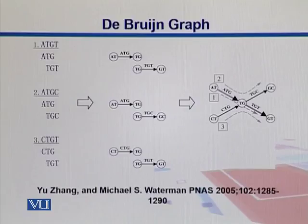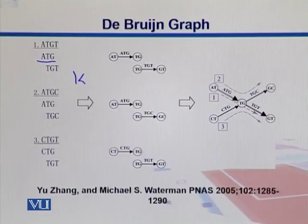Here is an example. We take a sequence — the read is of size 4: A, T, G, D. We can have two possible scenarios, such as A, T, D. Our K size is 3 in this example, so K equals 3. We can have two K-mers from this read, and from the third one we can have another K-mer.